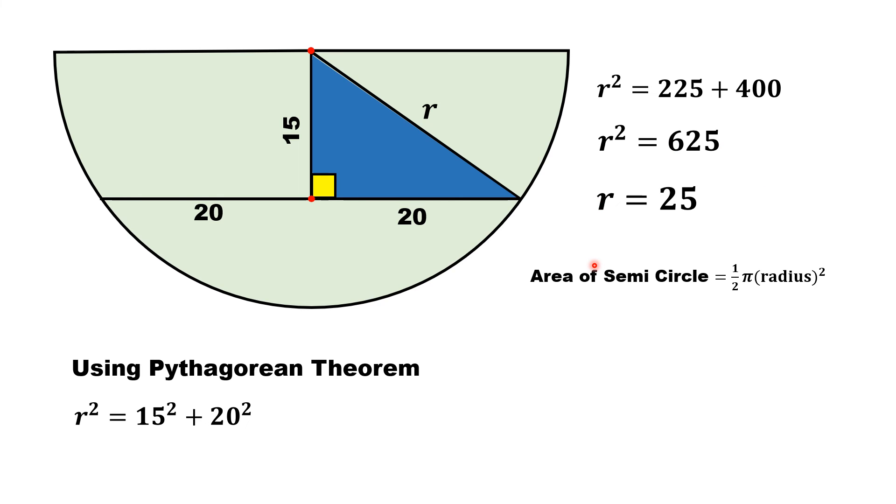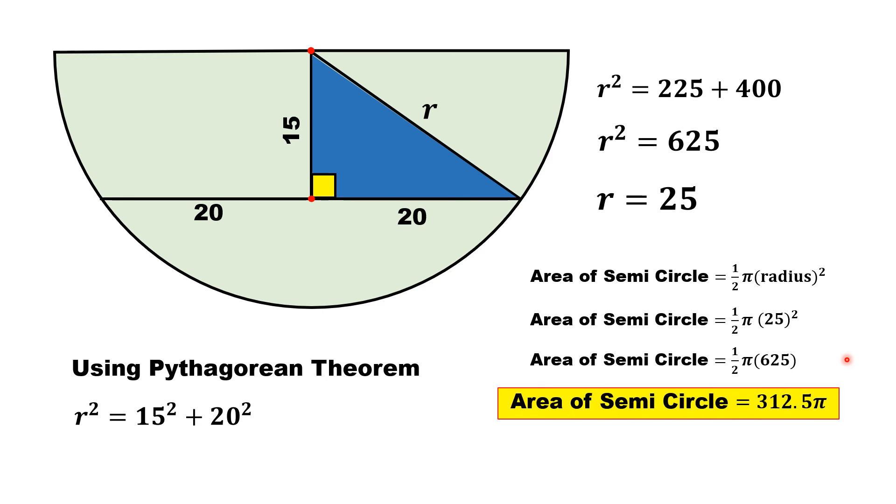We know that area of semicircle is equal to half times pi times square of the radius. Substituting the values, area of semicircle is equal to half times pi and radius is 25, so we will substitute 25 square. From here, we have area of the semicircle is equal to half times pi into 625. If we simplify it, we will get area of the semicircle is equal to 312.5 pi square units.